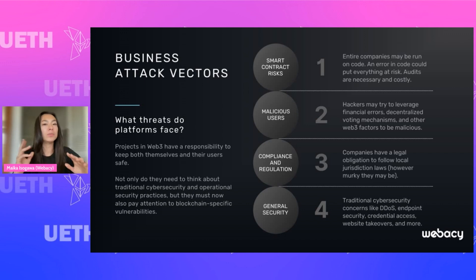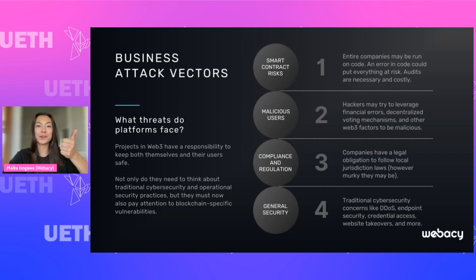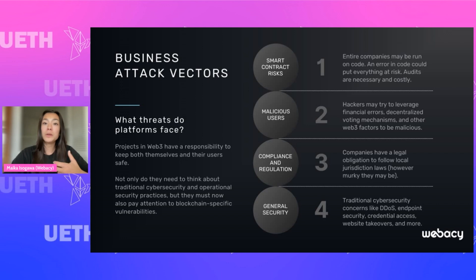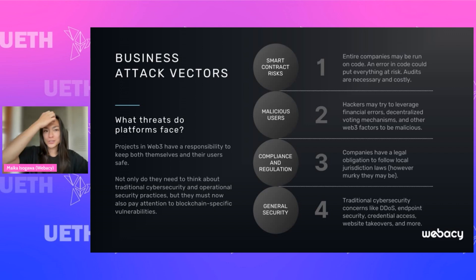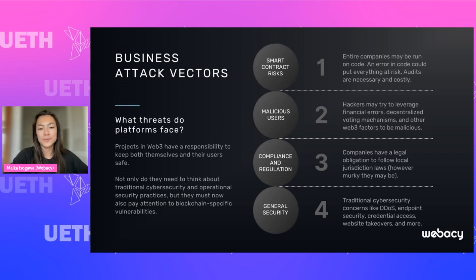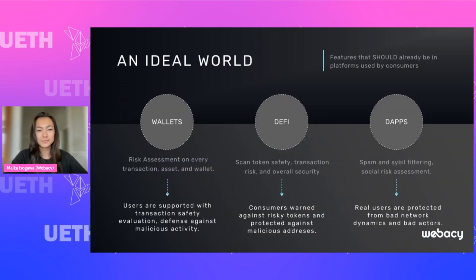Briefly on business attack vectors — some of you may be starting your own companies or working at some. There are smart contract risks, where you have audits, code reviews, and best safety practices. You also have to think about malicious users: if you have a DeFi platform, users could be trying to maliciously manipulate the markets on your smart contracts to drain you. From a regulatory perspective, you need to consider who you're allowing on the platform and whether you're compliant. Compliance and regulation differs in every jurisdiction. And there's general security — not just Web3 security, but also DDoS attacks and other attack vectors because you're building on the internet in general. That's traditional Web2 security.